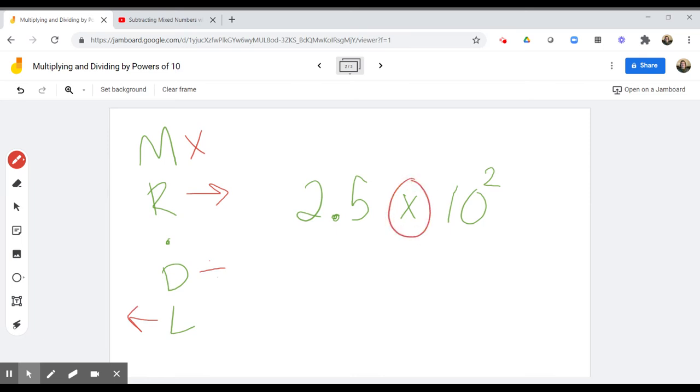Now again, we are multiplying, so we are going to move this decimal to the right. And this time, the power of 10 is expressed as a base 10 exponent. So the exponent number tells us how many powers of 10 we're multiplying by. So we're multiplying 2 and 5 tenths by 2 powers of 10. So that tells us that we're going to move the decimal to the right two times.